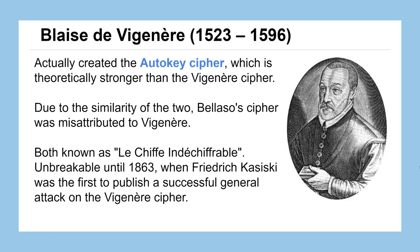This was really the encryption of its day back in the 1500s. Because it was so secure and easy to implement, it was called "le chiffre indéchiffrable," which basically means the unbreakable cipher. It wasn't until almost the late 1800s — 1863 — when Friedrich Kasiski was the first to publish a successful general attack on the Vigenère cipher, even though Charles Babbage, a name familiar from computing history, had been known to have broken the cipher earlier. Kasiski was the first to publish the method that you could use on any message.